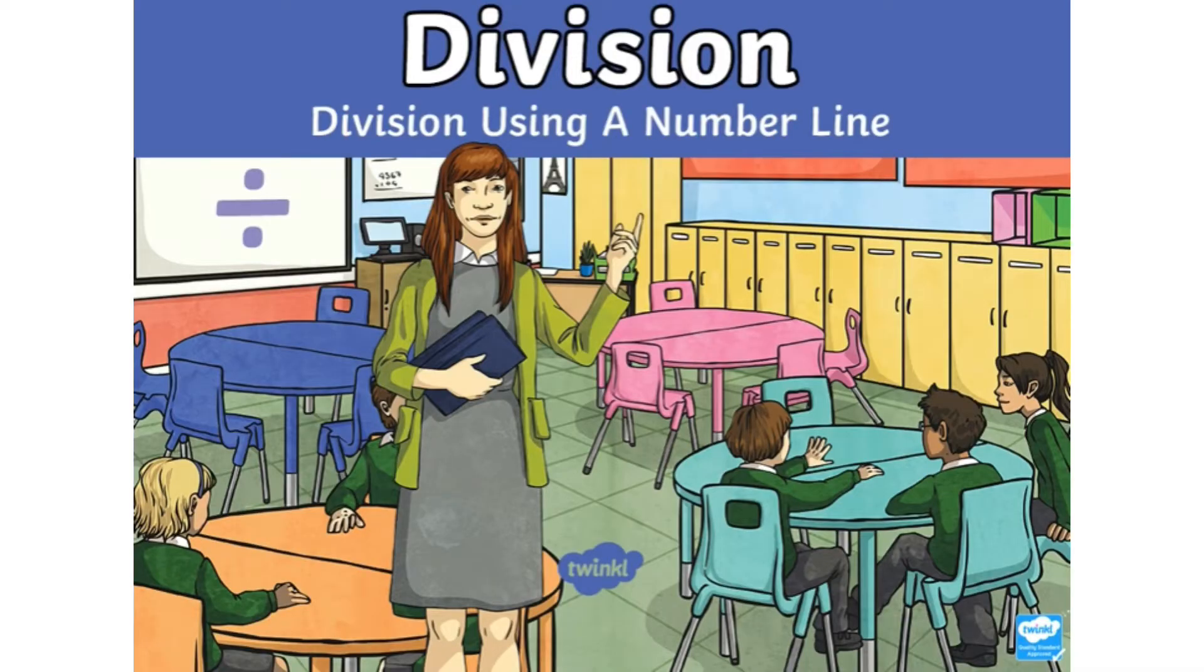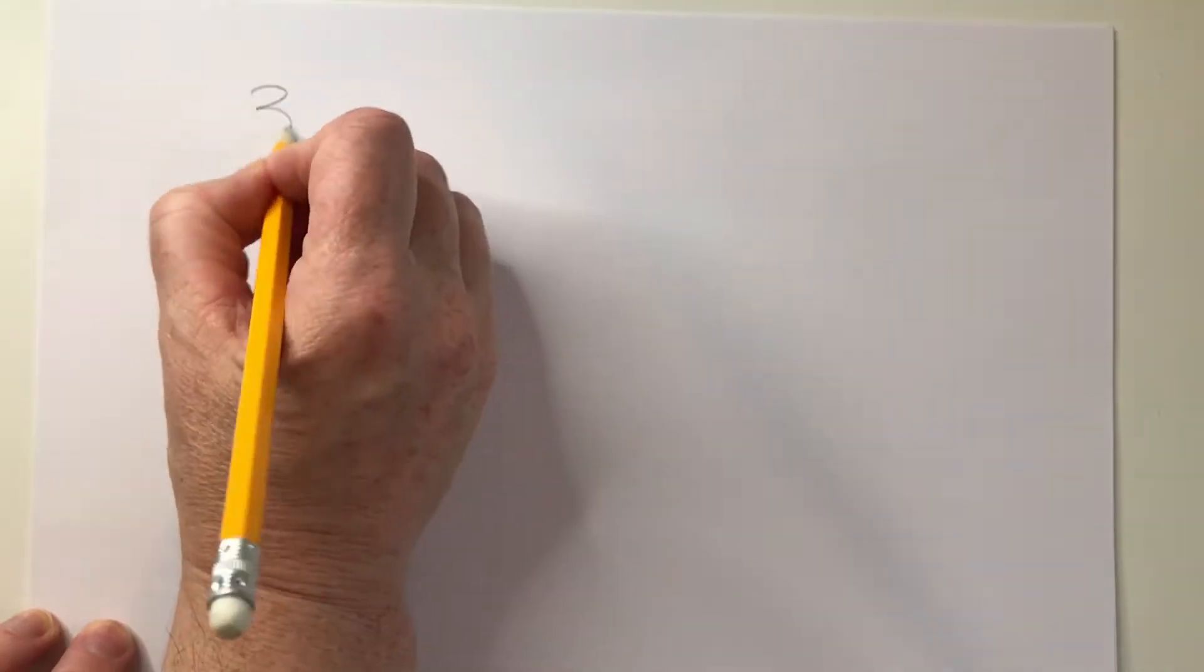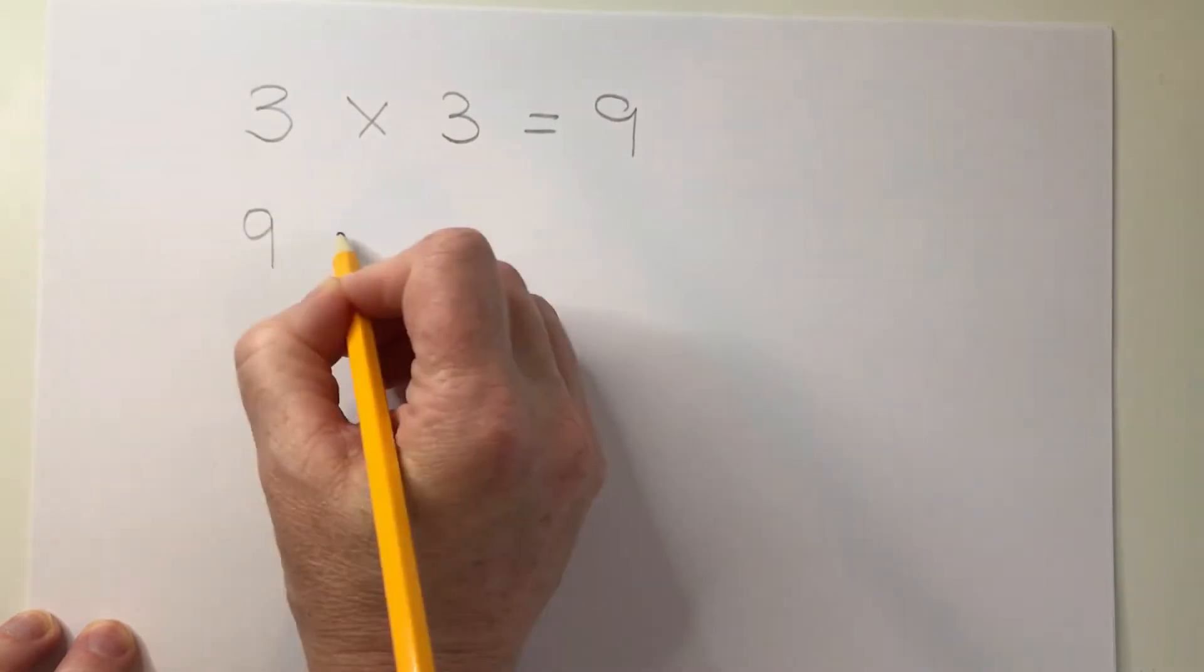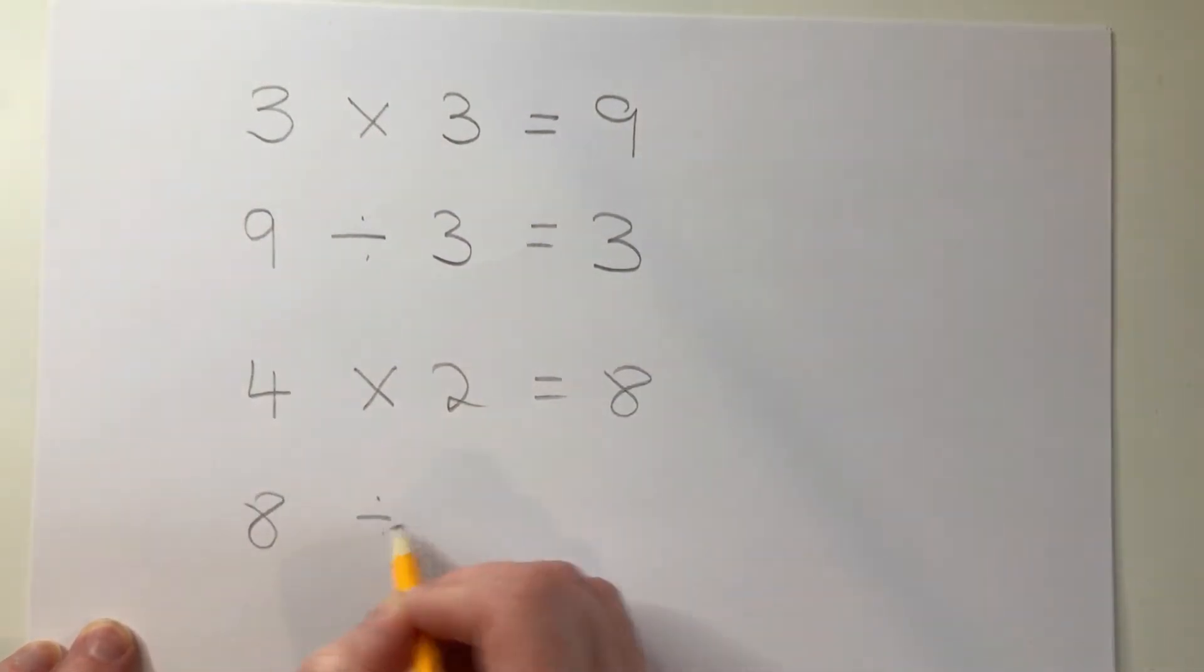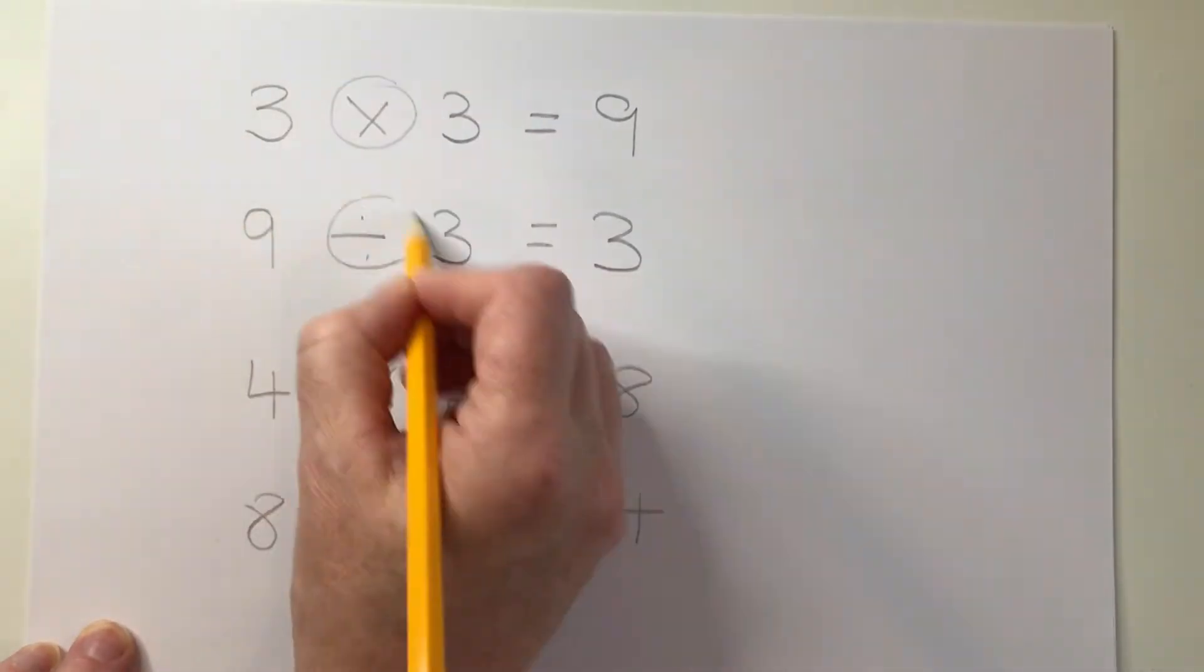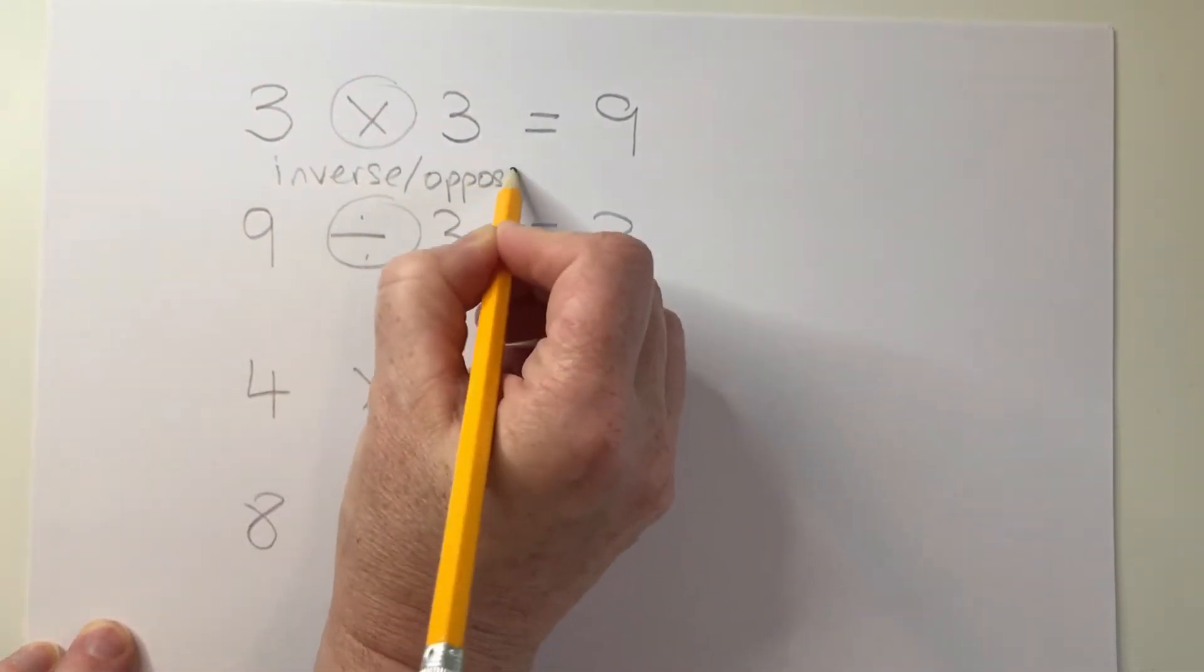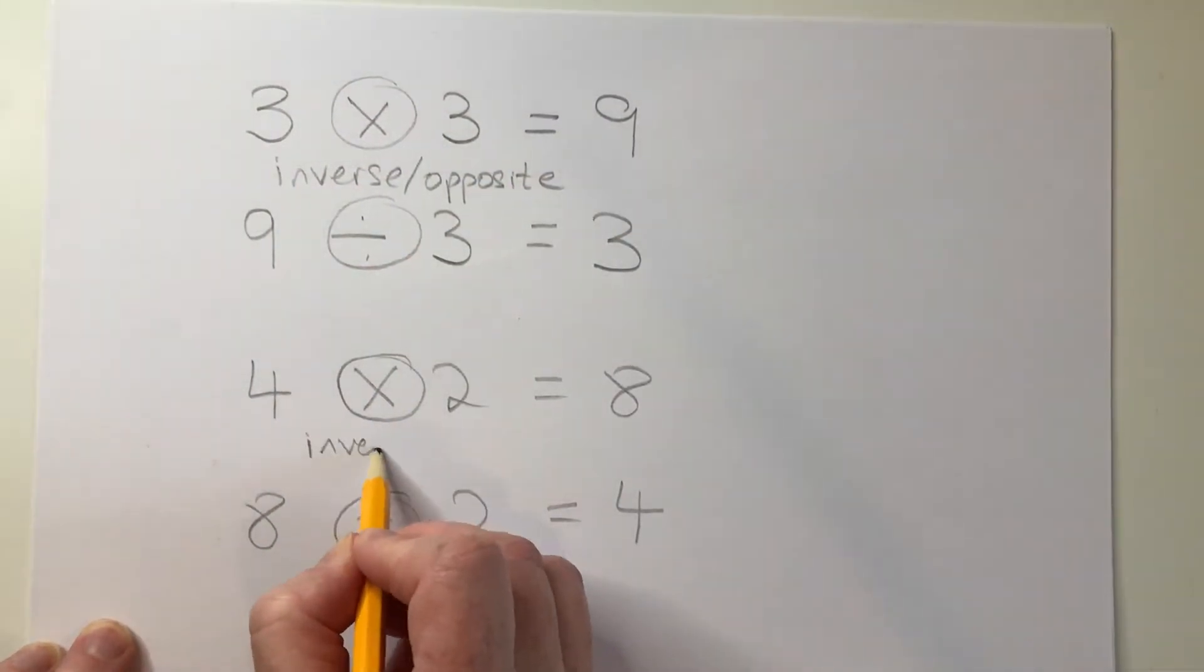Hi everyone, I'm Blahnard from Twinkle and here's how to use a number line to help divide. Firstly, it's really important that children understand the link between multiplying and dividing, how they are the inverse or the opposite of one another and how both multiplying and dividing are to do with grouping.